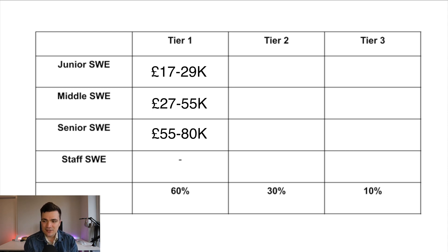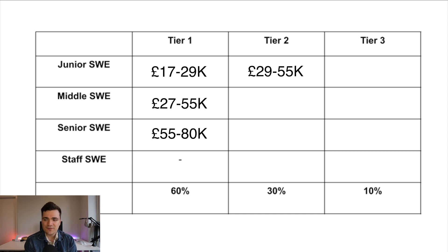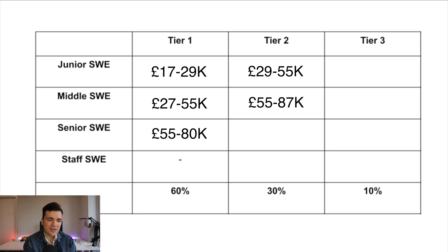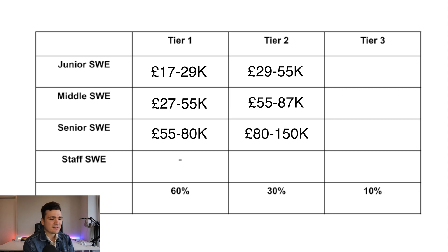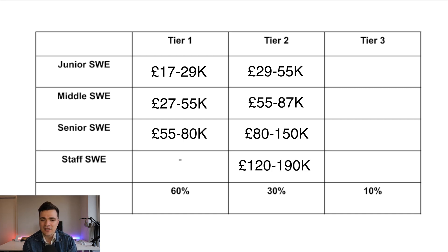Switching to tier two companies — this is where we see compensation drastically grow. As a junior engineer you can earn from £29,000 to £55,000, almost a two-times jump from tier one. For the middle software engineer, it's £55,000 to £87,000 — also roughly a two-times jump from tier one. The senior software engineer in a tier two company can earn from £80,000 to £150,000. The staff engineer salary starts from £120,000 to £190,000. Tier two companies clearly offer good money.